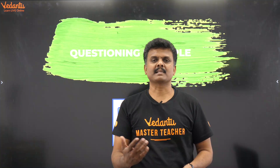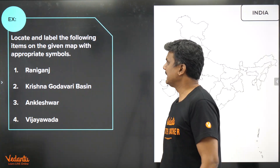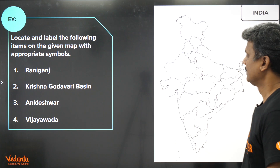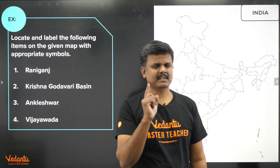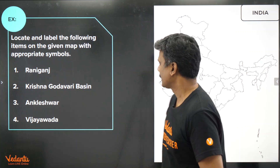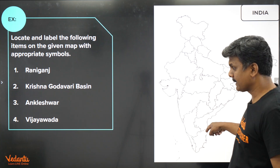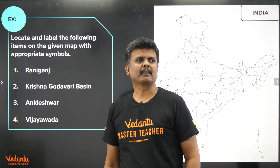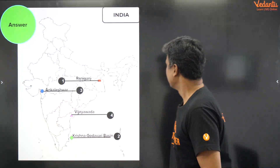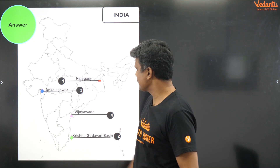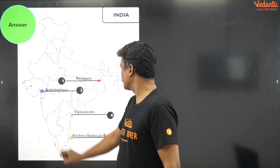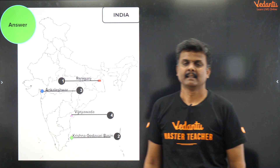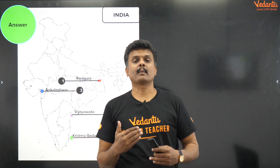What kind of questions can come in the exam? 'Locate and label the following items on the given map with appropriate symbols.' For example: Raniganj — West Bengal; Krishna Godavari Basin; Ankleshwar — Gujarat; Vijayawada — Andhra Pradesh. You should also mention what each location is known for. These kinds of questions are very common based on previous year patterns.